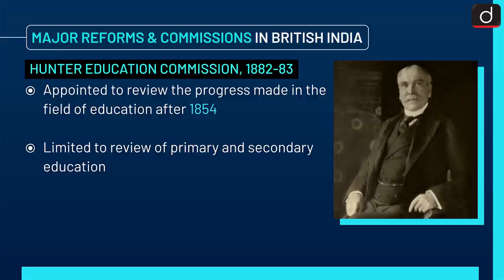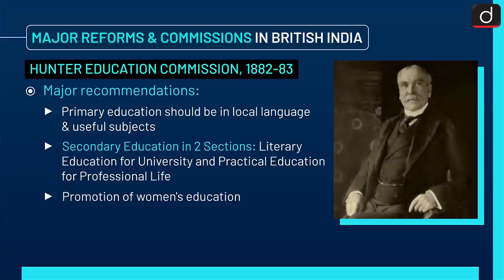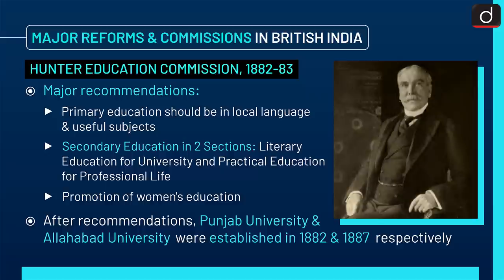Next is the Hunter Education Commission 1882-83. It was appointed to review progress made in education after 1854, but was limited to primary and secondary education. Major recommendations included primary education in local language and useful subjects, secondary education in two sections — literary education for university and practical education for professional life — and promotion of women's education. After its recommendations, Punjab University and Allahabad University were established in 1882 and 1887 respectively.